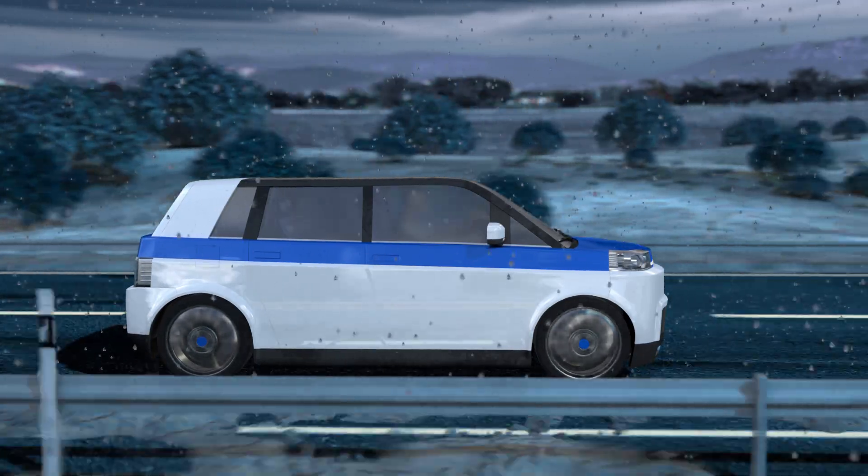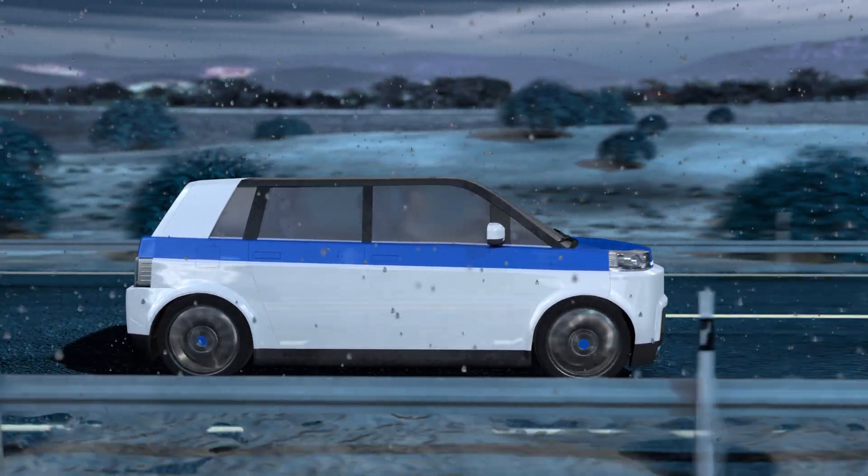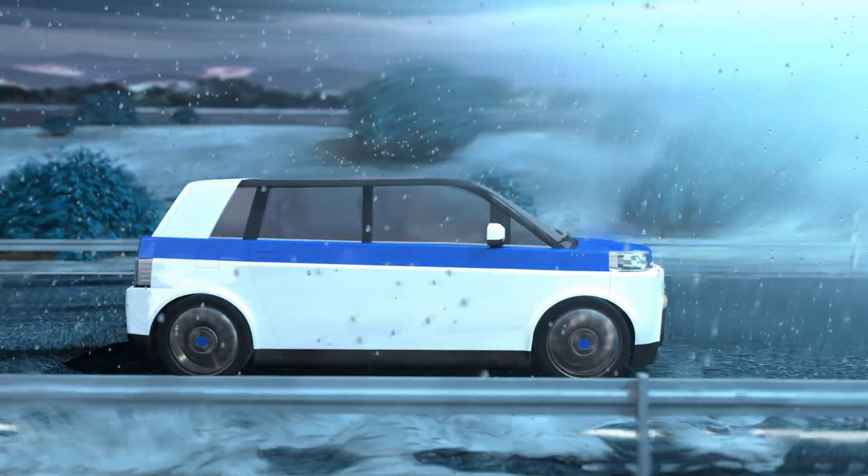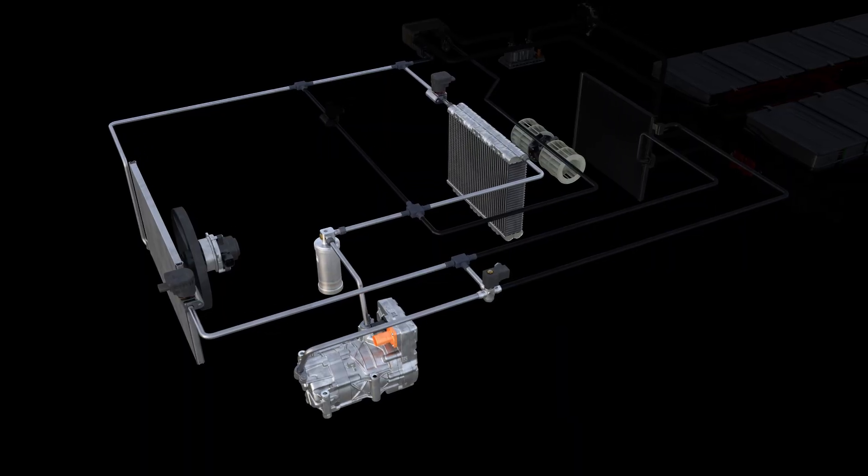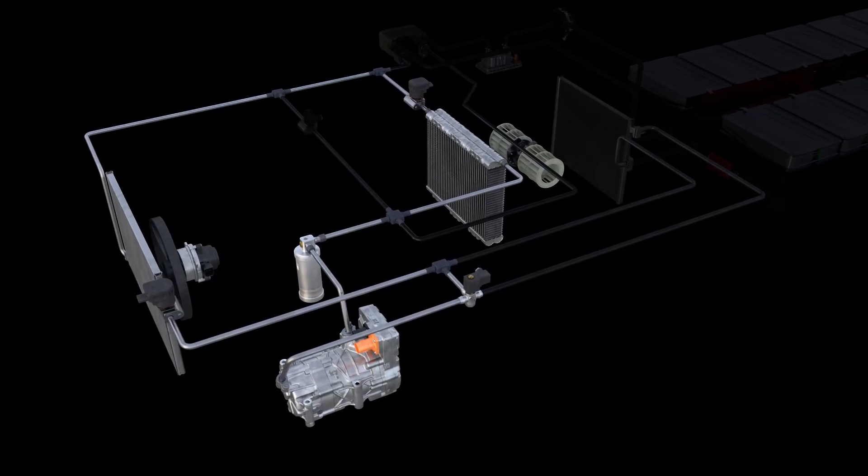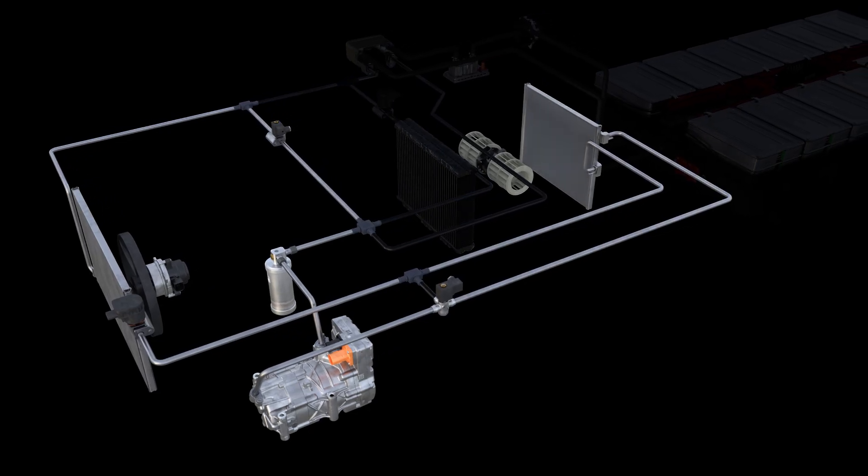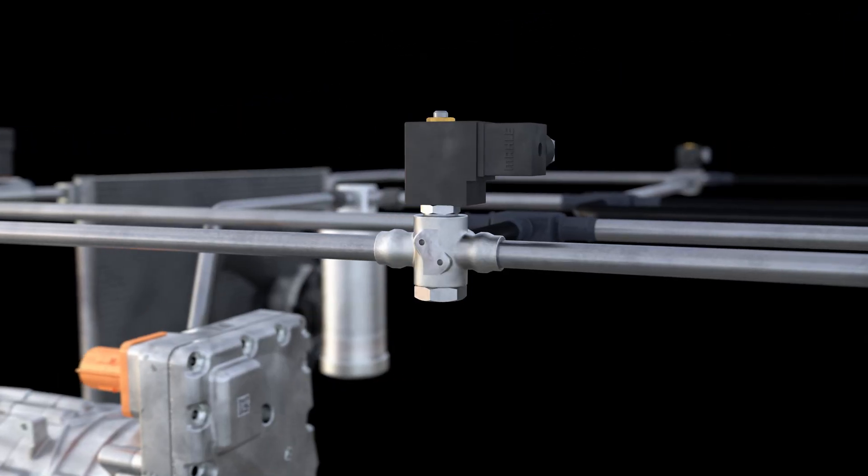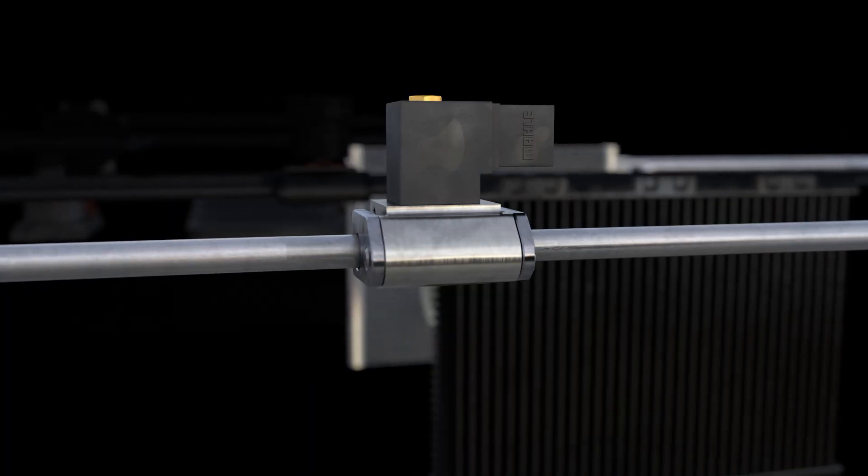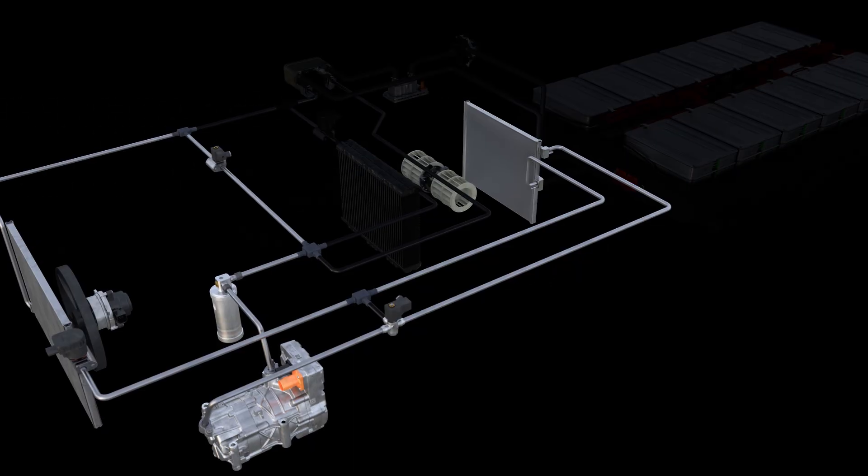Since electric cars do not have any waste heat generated by a combustion engine that could be used for heating, this task must also be performed by the air conditioning system. This is achieved by reversing the physical effect. Electromagnetic valves guide the refrigerant through the circuit using other routes.